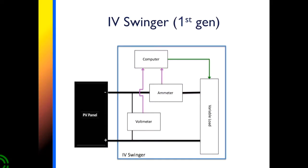The first generation IV Swinger is a lot like a light bulb load bank used to manually swing an IV curve. It has a variable load which is like the light bulbs, current and voltage meters, and in place of the human it has a Raspberry Pi computer. The results are written to a USB thumb drive.